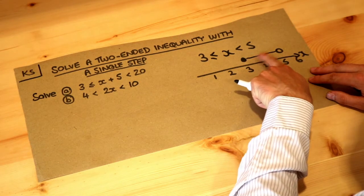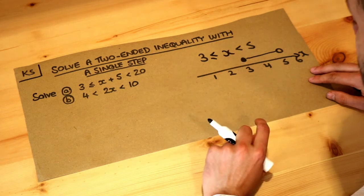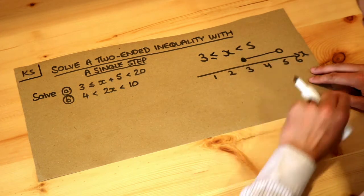So it could be 4, x could be 3.1, 4.9, etc. And it could be in 3, but it's not allowed to be 5.